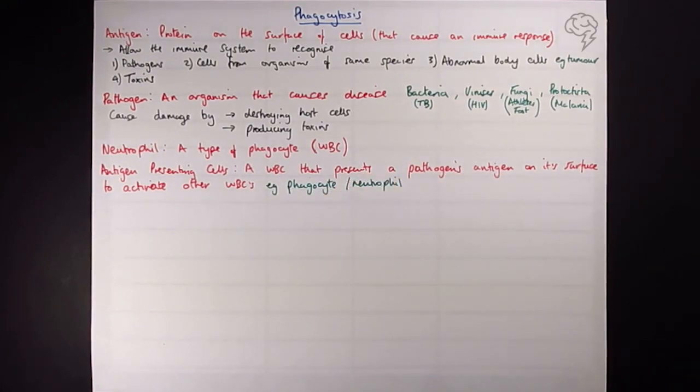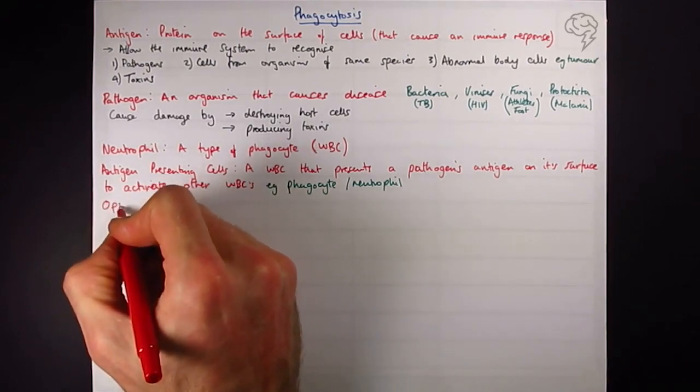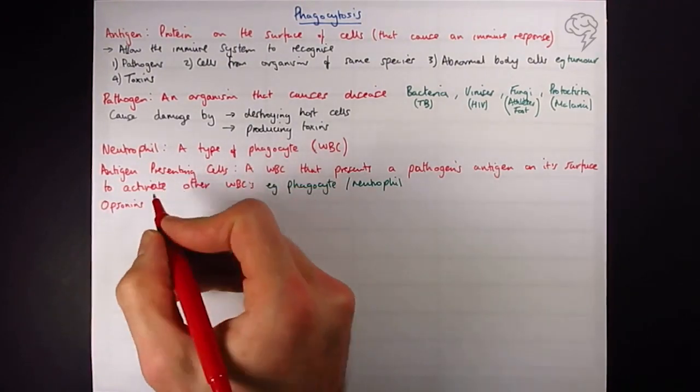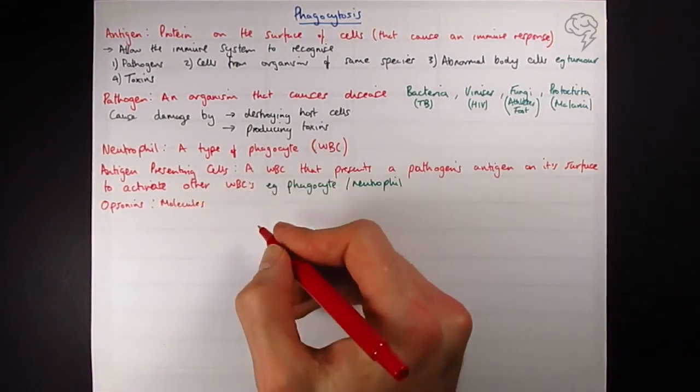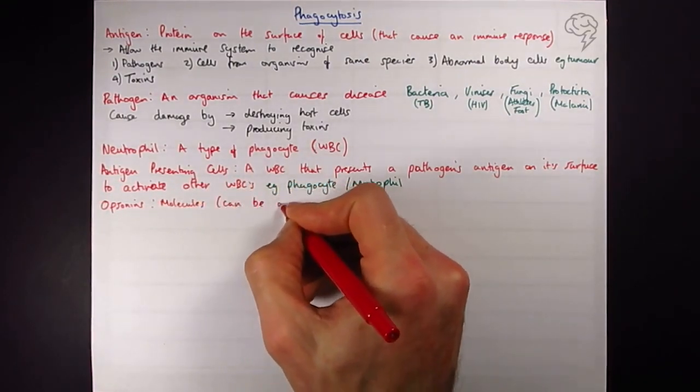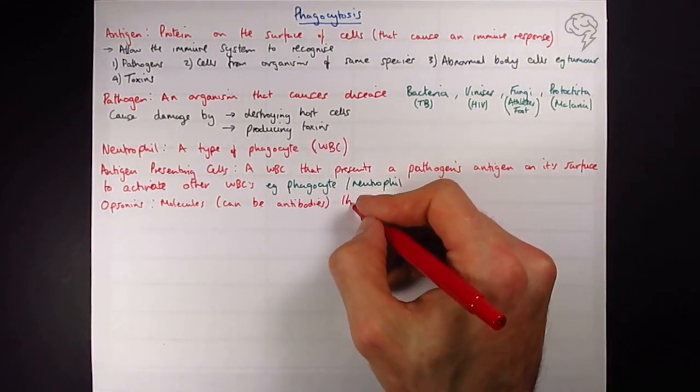Another key term you might come across here in the immune system: opsonins. These are molecules, they're a family of molecules. They can be antibodies, they don't have to be antibodies, and they make it easier for the phagocyte or neutrophil to engulf the pathogen. Lots of key terms here.